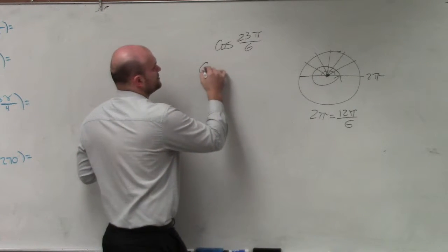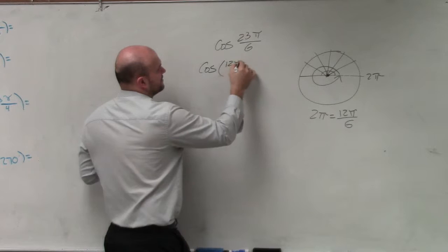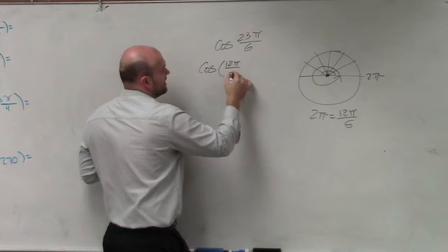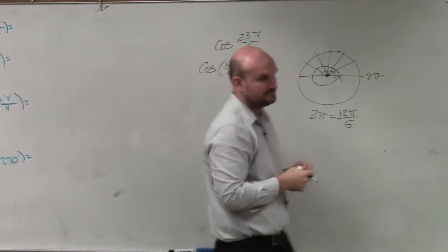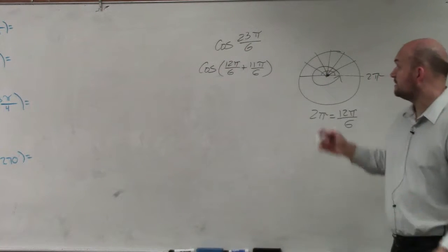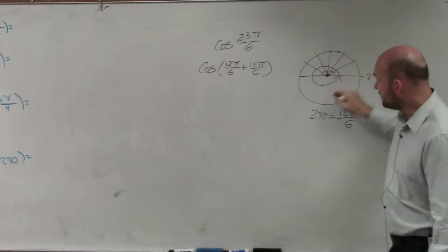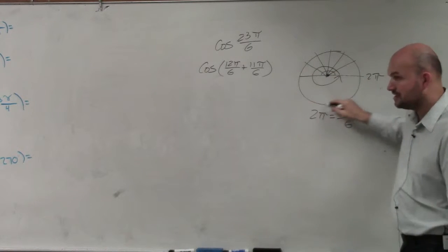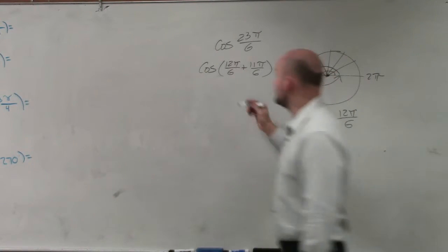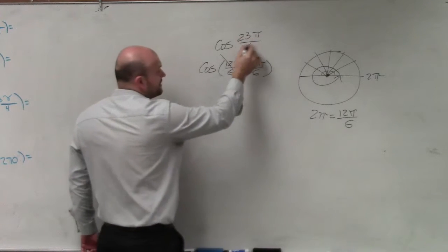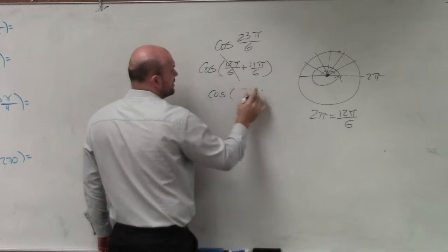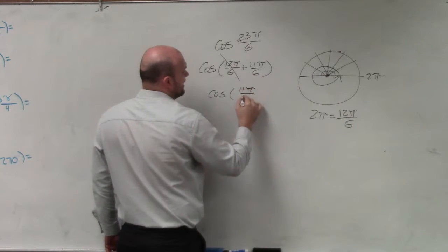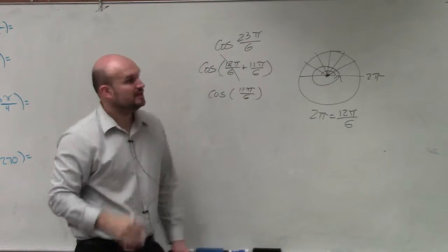So what I can use is what we call period as an aid. I can rewrite 23π/6 as 12π over 6 plus 11π over 6. So what that really means is you're doing 12π over 6 plus 11π over 6. So in reality, 23π over 6 and 11π over 6 are what we call coterminal angles, hence what you guys are supposed to be doing for your warm up.